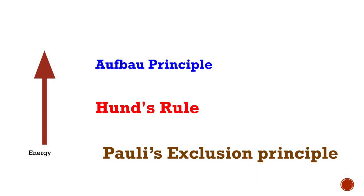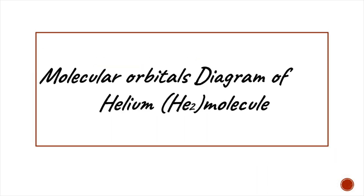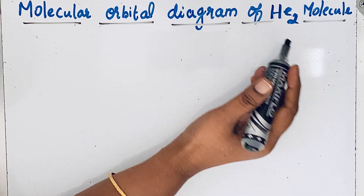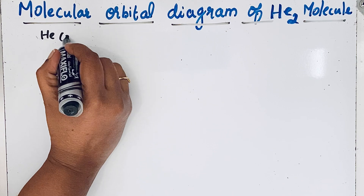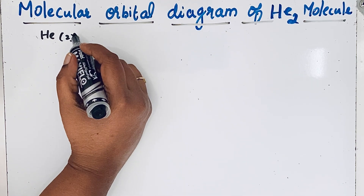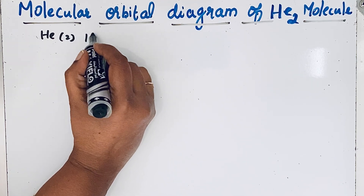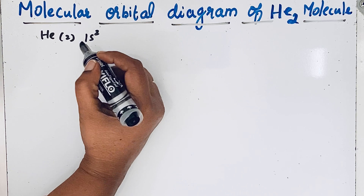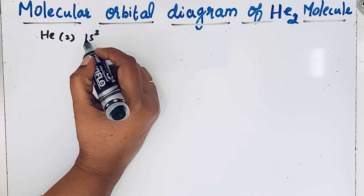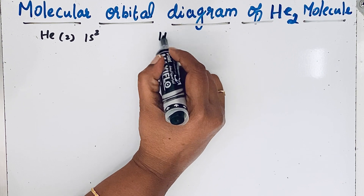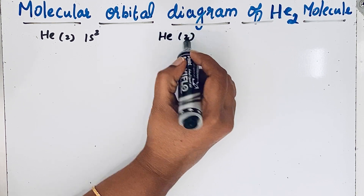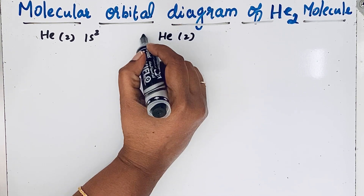We are here to draw the molecular orbital diagram for the helium molecule, which is formed by the combination of two helium atoms. Helium has atomic number 2, so the electronic configuration of each helium atom is 1s².